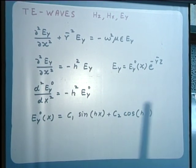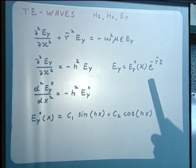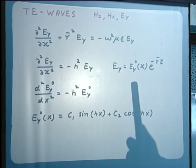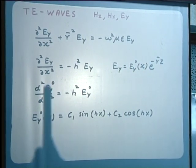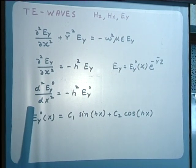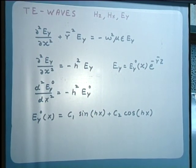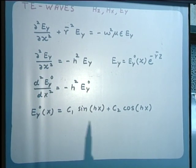Considering the nature of Ey — it has no variation with respect to y, it propagates in the z direction with propagation constant γ̄, and the only unspecified variation is in the x direction — the partial differential equation simplifies to an ordinary second-order differential equation. This makes it easy to write the solution for the x-varying part of Ey: E_y0(x) = C₁ sin(Hx) + C₂ cos(Hx).